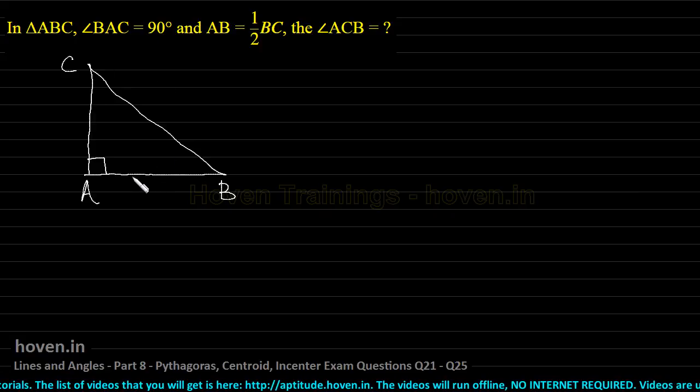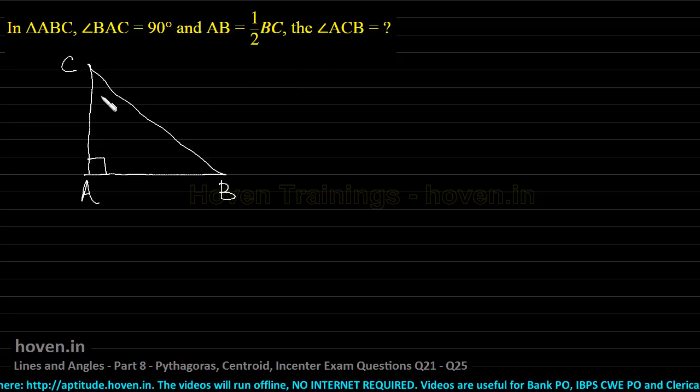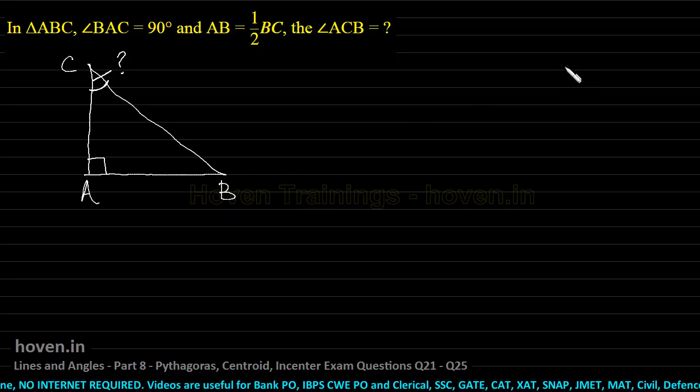And AB is half of BC. This AB has been given as half of BC. Then the angle ACB is what? We have to find out this angle. We need to think out of the box in this case. A special thinking is required.